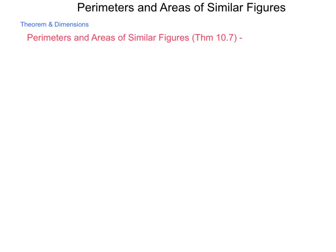Now we're going to look at how perimeters and areas are associated or related to each other with similar figures. So we're going to begin with theorem 10.7, which is the perimeters and areas of similar figures.